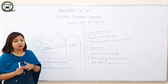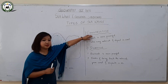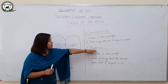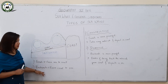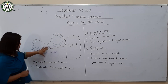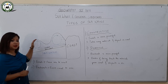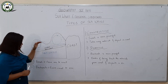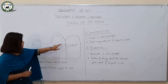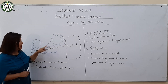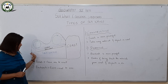When sea waves hit the coast, two types of sea waves are formed: constructive sea waves and destructive sea waves. Before moving into those, let us consider swash and backwash. As seen in the diagram, when waves move from the sea towards the coast, it is regarded as the swash. When the sea water retreats back from the coast towards the sea, it is regarded as the backwash.